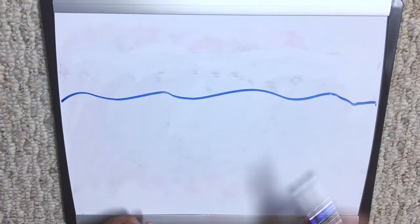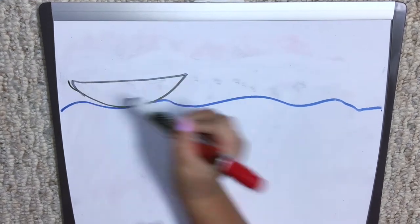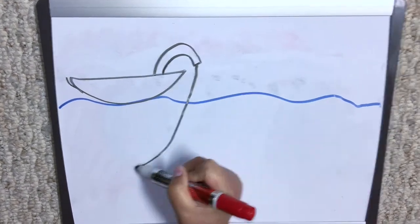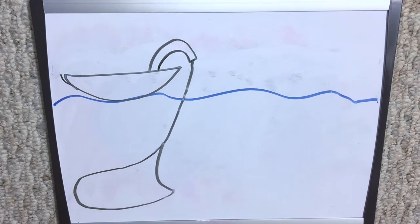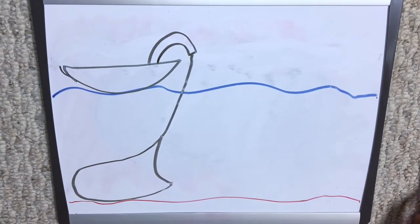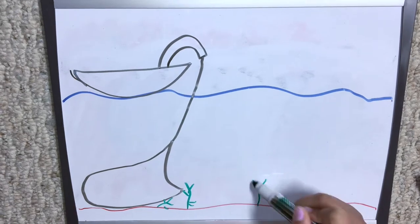Bottom trawling is a commonly used method of overfishing that uses huge nets weighed down with anchors on the boats that are dragged along the sea floor, proceeding to catch and crush anything in the net from fish to coral.